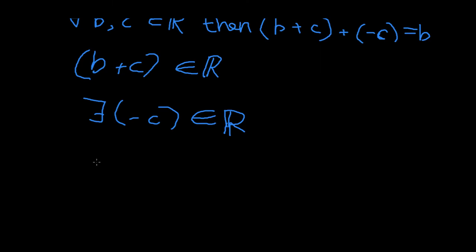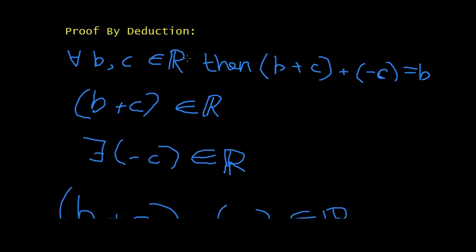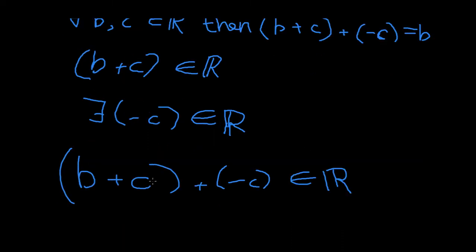Now we're saying that b+c+(-c) does in fact give me a real number. So all of this, we haven't even reached actually proving it yet. All we're saying now is that this is a real number, this is a real number, so the whole equation will give me a real number. At the beginning they say b is a real number, so this whole equation must equal b, which is a real number. We're just making sure that it's correct.